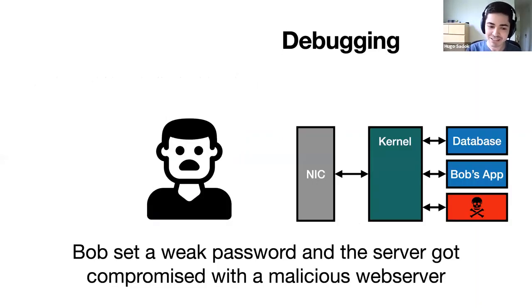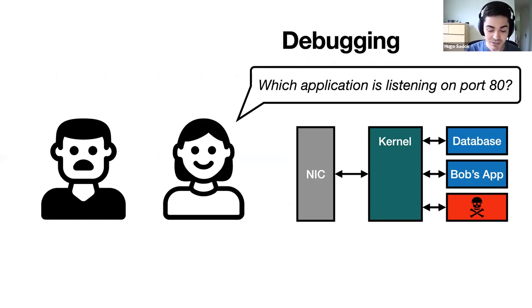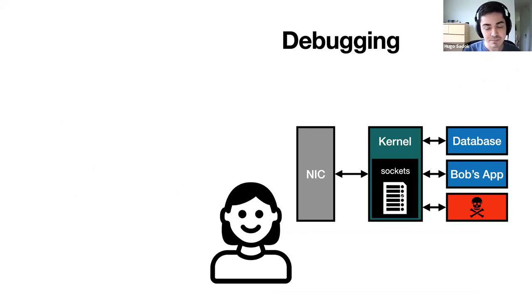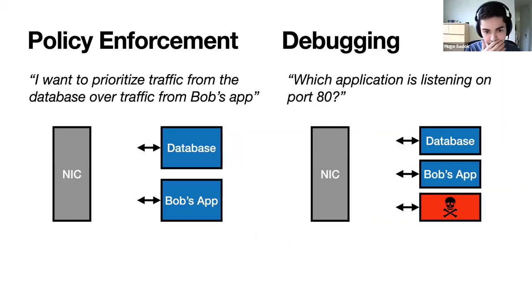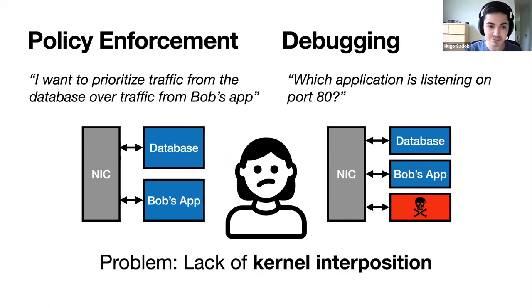Writing a very inefficient application wasn't the only mistake Bob made — he also set a weak password, which caused the server to be compromised with a malicious web server. Again, Alice knows what to do. She can leverage the kernel's knowledge of all open sockets in the system and use tools like netstat or SS to find out exactly which application is causing the problem. These are only two examples of the many policies and debugging capabilities made possible by the kernel's ability to interpose on all the data. But if you use a kernel bypass strategy, you no longer have kernel interposition and can no longer enforce these policies or have centralized debugging capabilities.